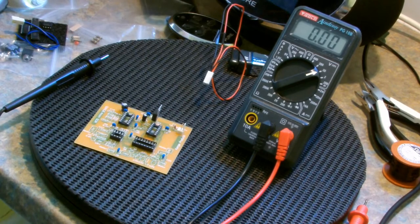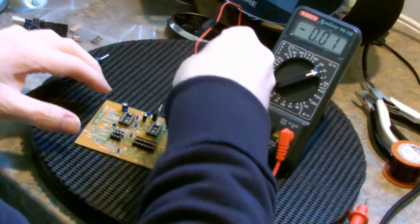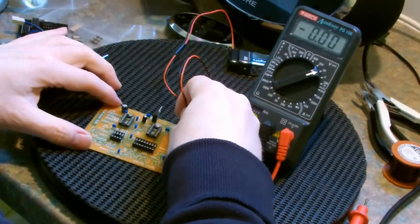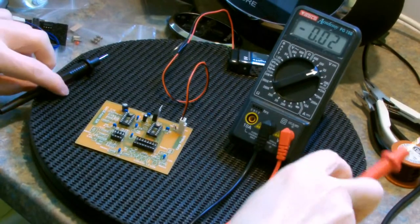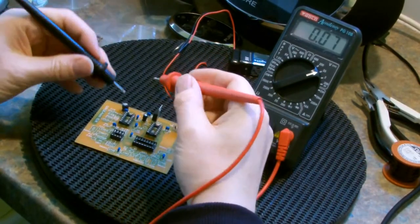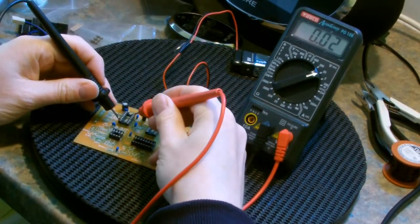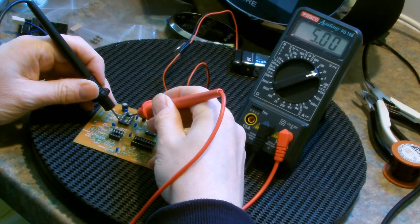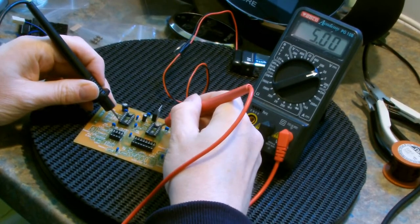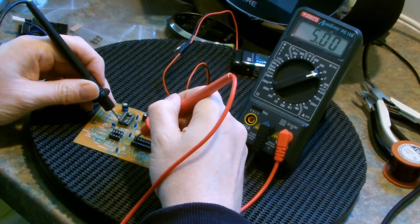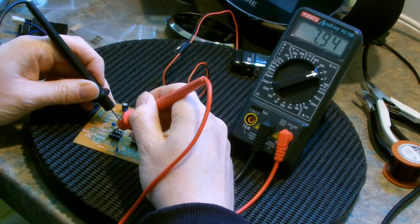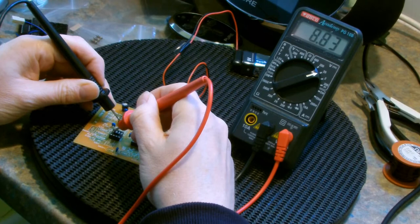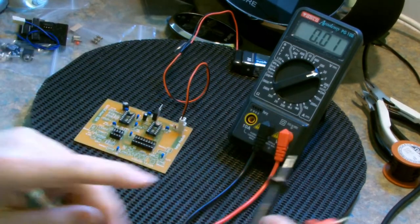Once the regulator IC3 and the rest of the supply circuitry is in place on the board, the instructions say to check the supply voltages. I'm doing this by temporarily connecting a 9V battery and checking the voltages from ground to pin 14 on ICs 1 and 5, and pin 16 on IC2. These voltages should be 5V. The voltage on pin 8 of IC4 should be about 8.5V.